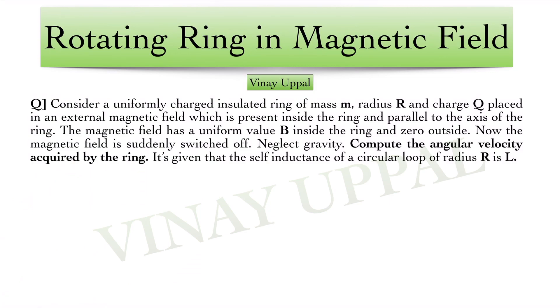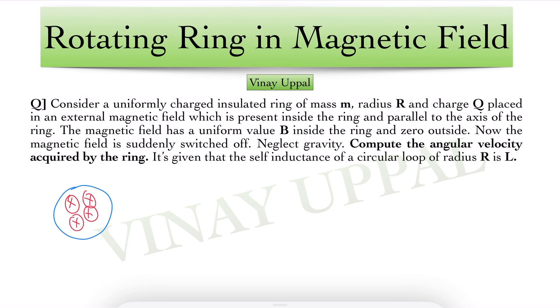So let us just read the question first. Consider a uniformly charged insulated ring of mass m, radius R and charge Q placed in an external magnetic field which is present inside the ring and parallel to the axis of the ring. The magnetic field has a uniform value B inside the ring and 0 outside. So let me just draw the diagram. I have a ring of radius R and magnetic field which is present everywhere inside with a uniform value B.